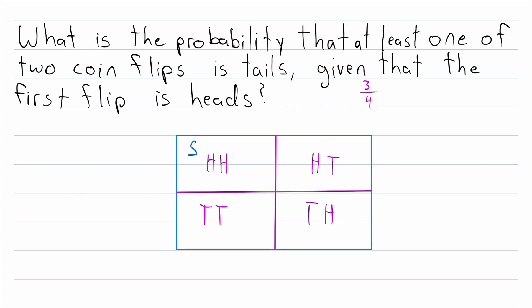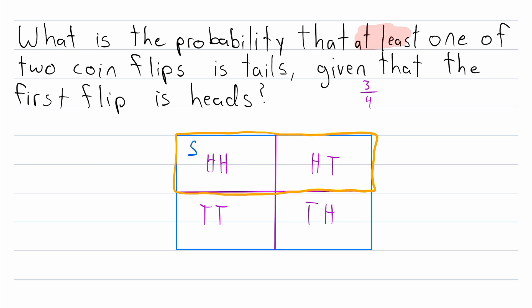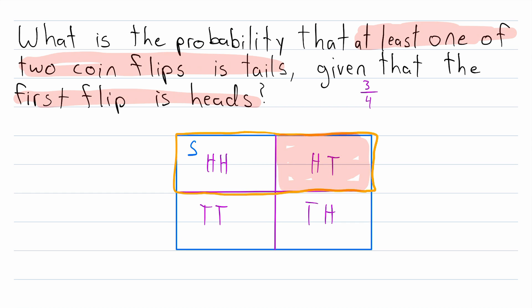It should seem reasonable to suspect that the probability of getting at least one tails will change when we know that the first flip is heads. This condition restricts the sample space to the outcomes where the condition is fulfilled — where the first flip is heads. That means heads-heads and heads-tails are now the only possible outcomes. Where does the event of at least one tails intersect the condition that the first flip is heads? They intersect only at heads-tails.